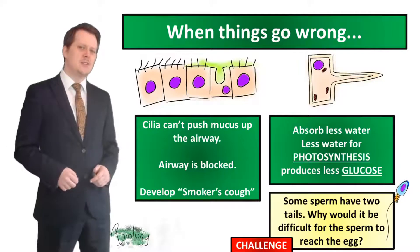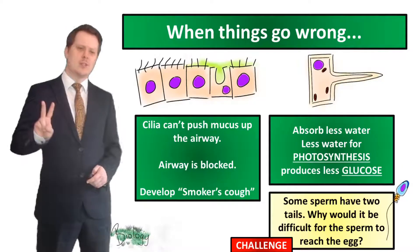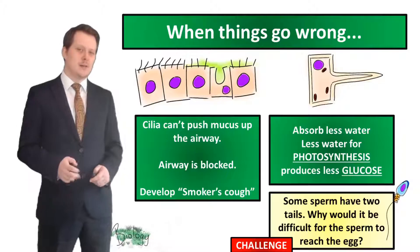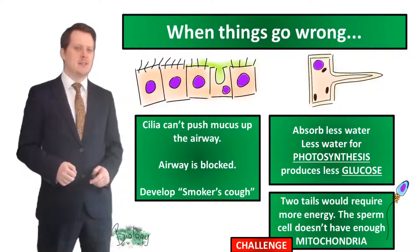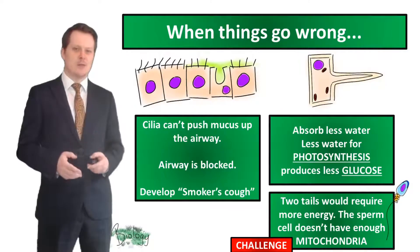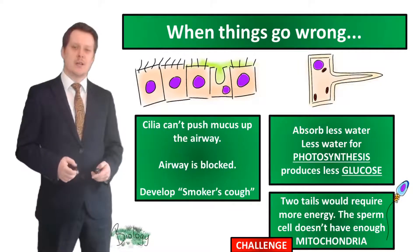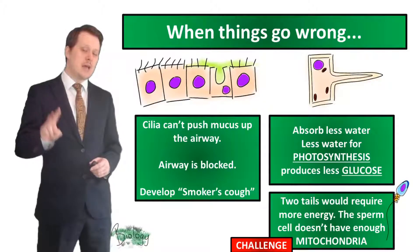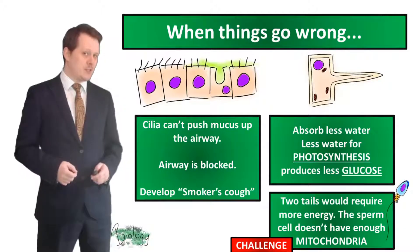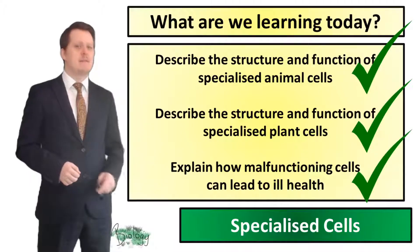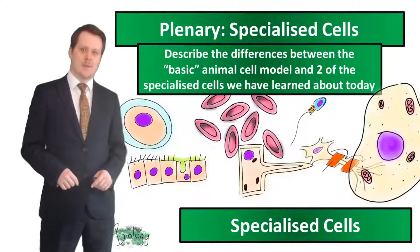For the challenge: some sperm cells have two tails — why would it be difficult for the sperm to reach the egg? Two tails would require more energy, and a single cell would not contain enough mitochondria to release that energy. Also, two tails would be trying to swim in two different directions. So now we've had some experience in explaining how malfunctioning cells can lead to ill health.